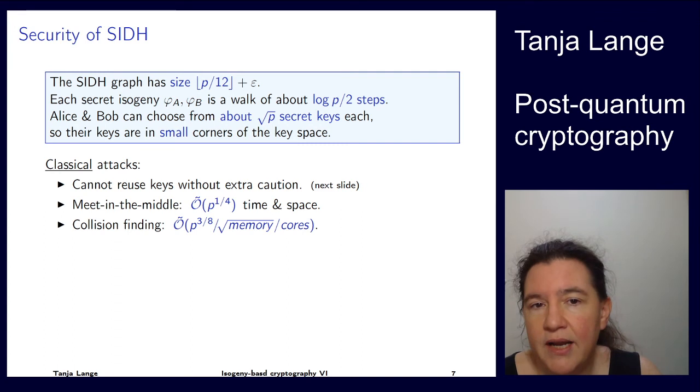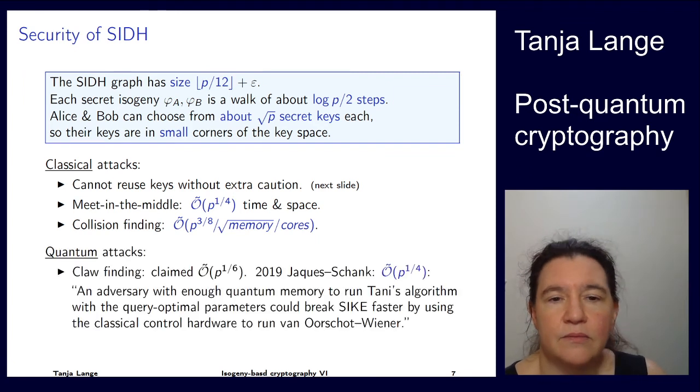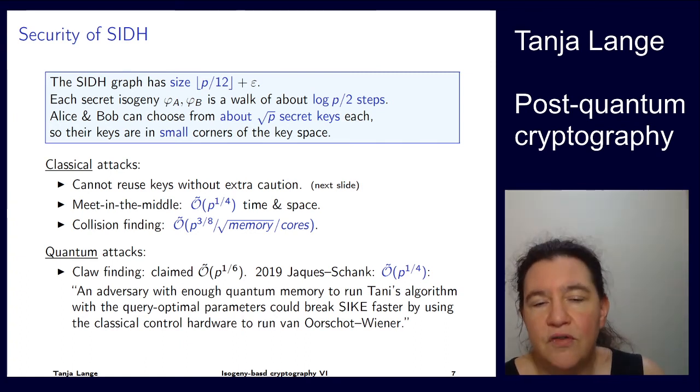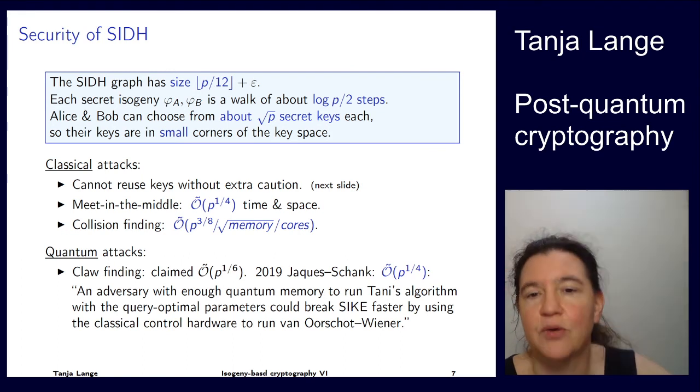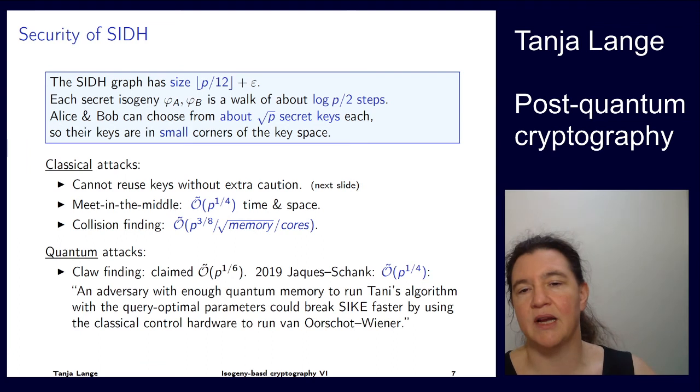There is something to watch out. In C-SIDH I was highlighting that you can be sure that Bob's or Alice's key is valid. Here you actually cannot make sure. Under quantum attacks, there is something called claw-finding, so Tani's algorithm, which looks like it's sixth root of p, so the cube root of the key space. But Simon, Jaques, and Schanck were showing that if you would actually have all of this circuitry to run Tani's algorithm, you could just use the circuitry, the classical part, like the control hardware that is above the quantum computation, and then run van Oorschot-Wiener, which is a classical attack for searching. So also under quantum attacks, it doesn't get any faster than the fourth root of p. So that is good news for the security of SIDH.